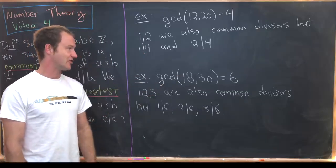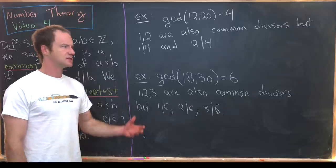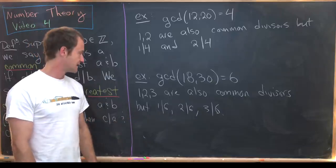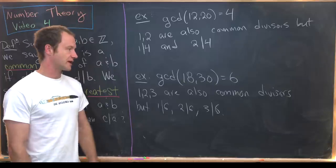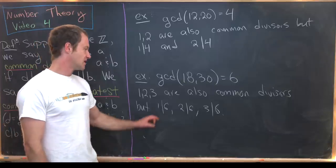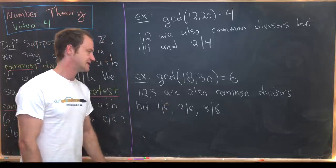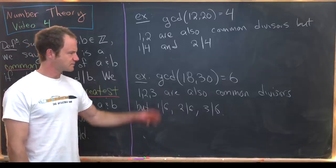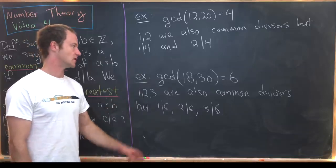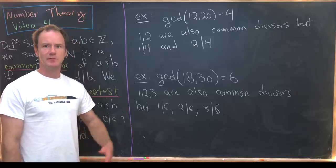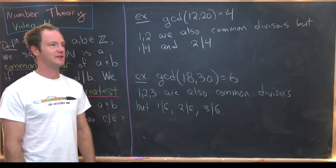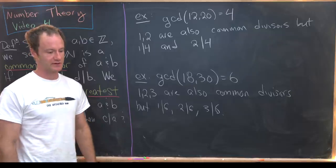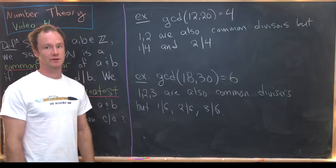Next, the GCD of 18 and 30 is 6. By elementary school arithmetic, we know that 1, 2, and 3 are also common divisors, but 1 divides 6, 2 divides 6, and 3 divides 6. So you can play this game all day long with small numbers, but eventually we'll need some sort of method for finding the greatest common divisor of larger numbers. That's actually something we're working towards.